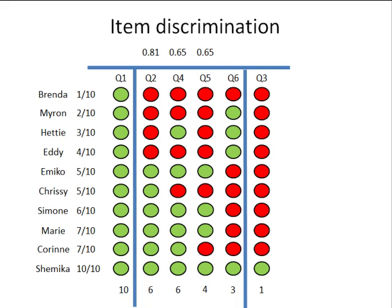Question 6 is a bit of an anomaly. Three students answered it correctly, but overall in their test results they didn't answer many questions correctly. So question 6 is a bad question when it comes to discriminating between people who did well and badly on the test. When we work out its discrimination we end up with a negative number, actually very close to zero. This question isn't very good at predicting the total score.